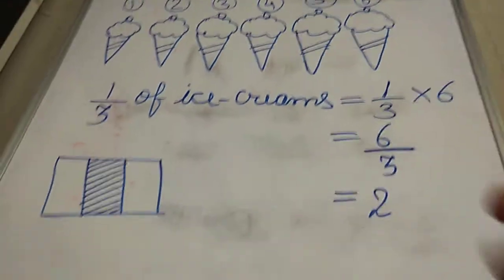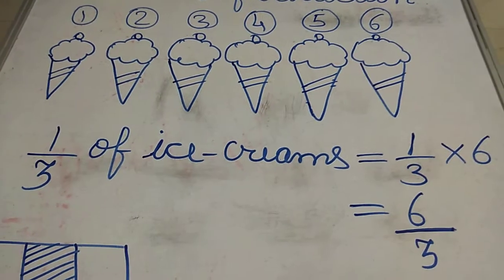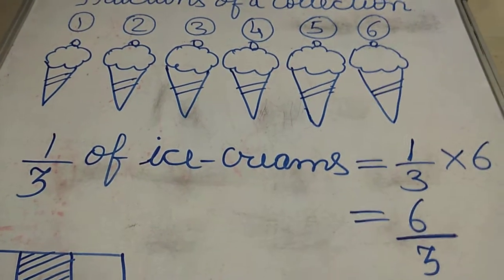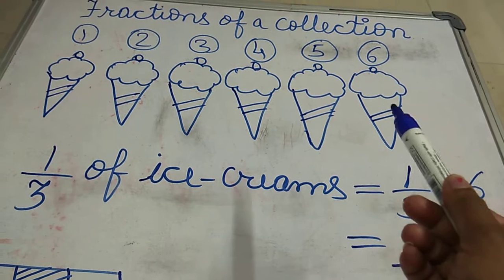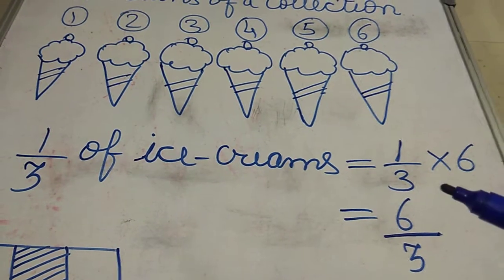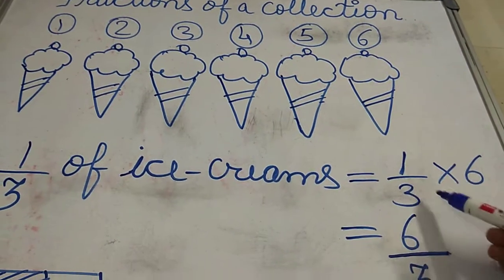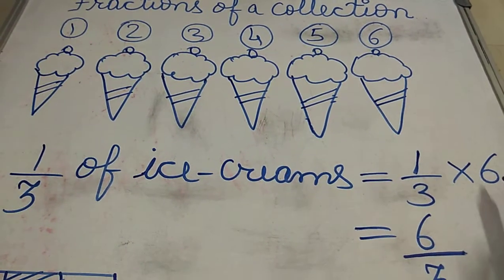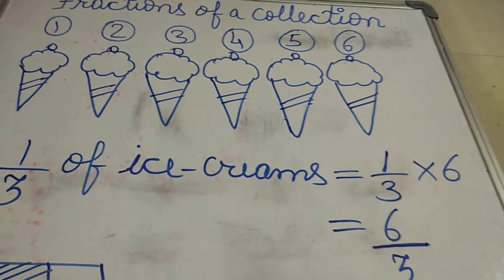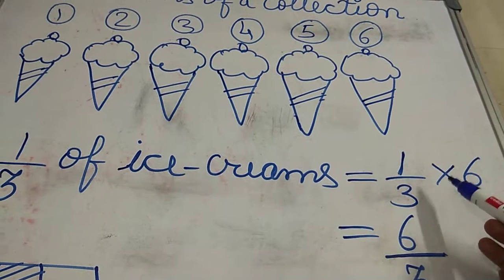But if I want to find out what is the one third of the total numbers of ice cream I have? And how many ice creams I am having? Six ice creams I am having. So one third of six, one third of total number of ice creams that is six. So here we consider of as multiplication.